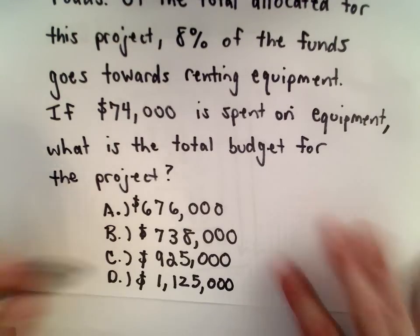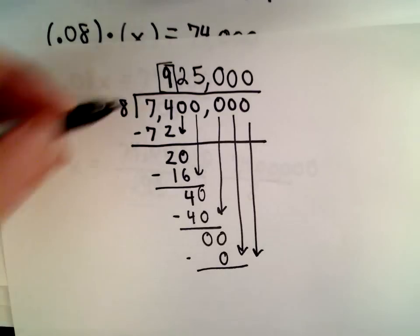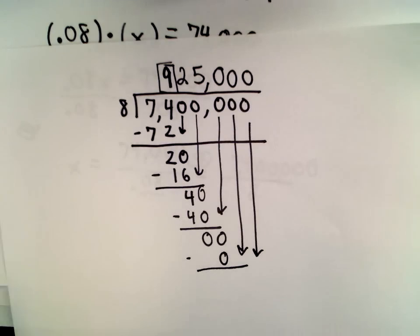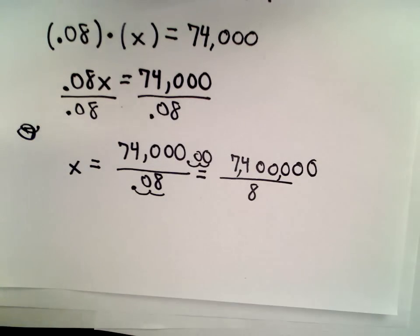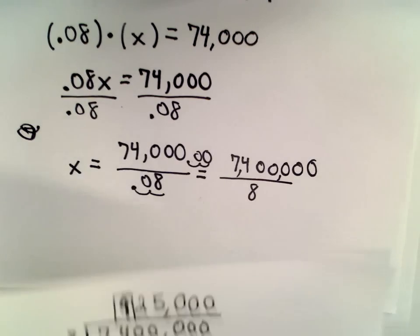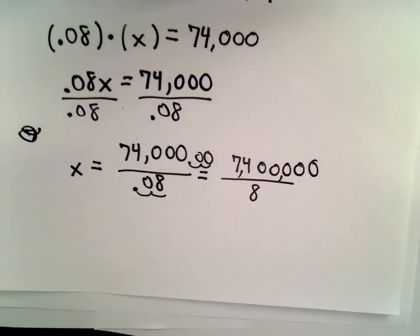If you didn't have the answer choices, well obviously you would have to work it all the way out. But again, when you have these answer choices, use them to your advantage. Okay, so that was one way to do it, the division way.